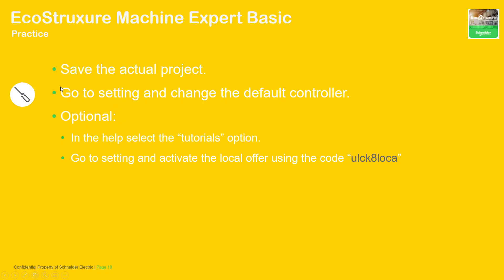What I want you to do is save the actual project, go to the settings and change the default controller to the one you're going to work with, enter into the help and select the tutorial to check the videos that we have, and then you can activate the local offer using this code.